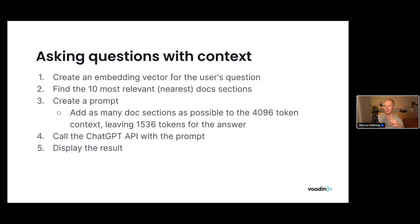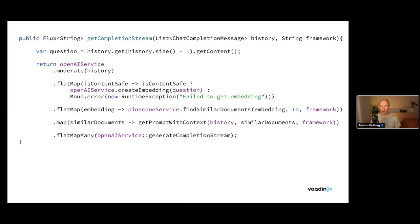When asking a question with context: we take the user's question, create an embedding for it, then go to Pinecone to find the 10 most relevant sections. Then we do a little bit of math with tokens to figure out how much of the chat history we can maintain while still leaving enough space for the answer. Once we've done all that, we send the appropriate content to ChatGPT and get a result. I'm not going to go through all the code here, but I have a link to the actual repo. This is the heart of it all — essentially that previous slide in code form.